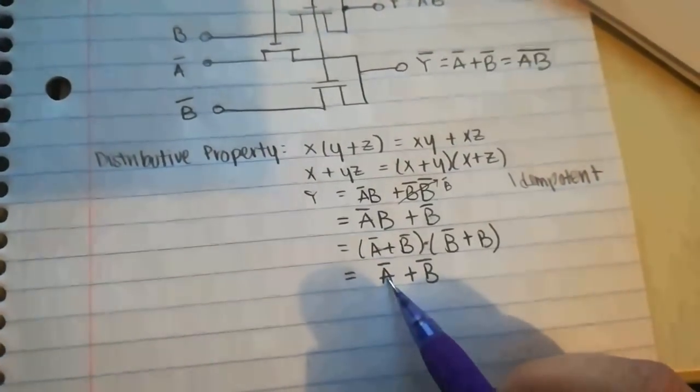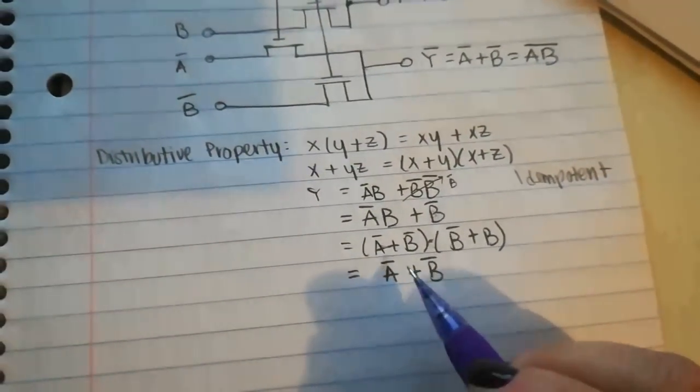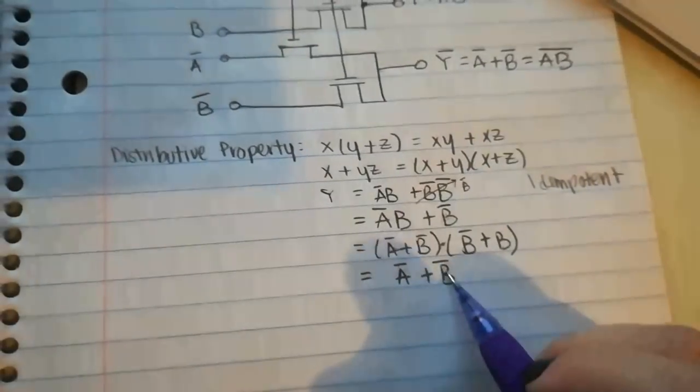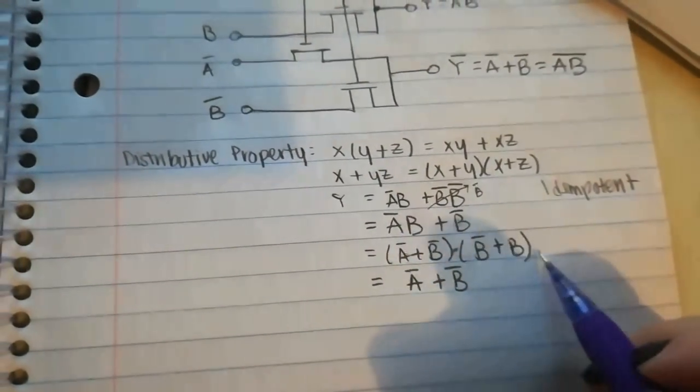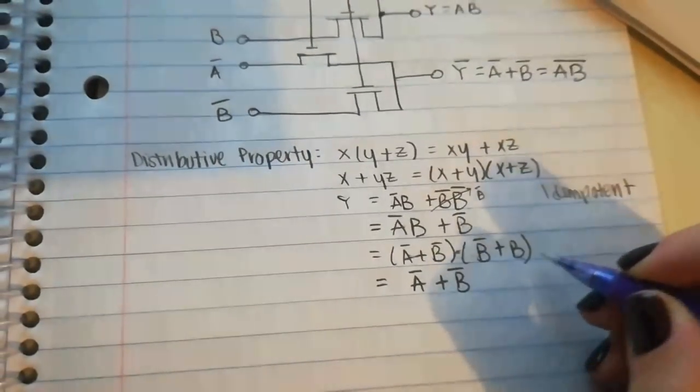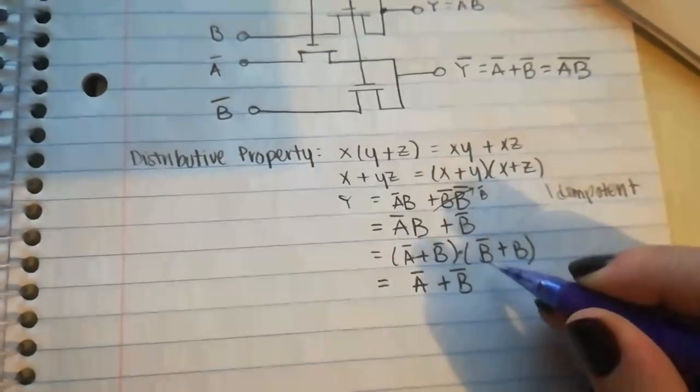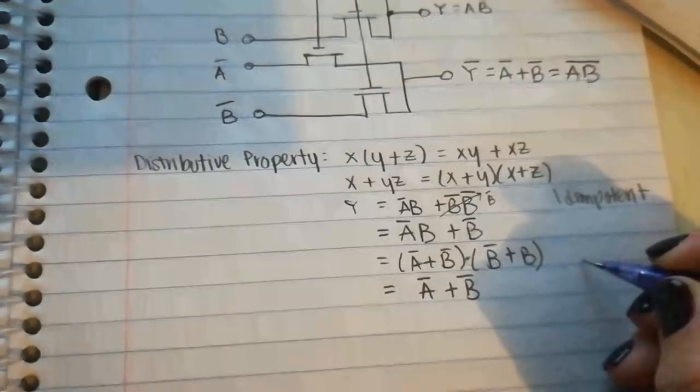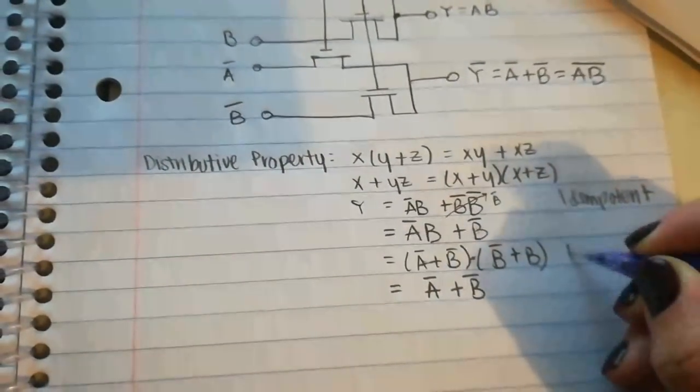And now here you are left with Ā plus B̄. Why? Because another one of our properties says that B̄ plus B, or something plus that something bar, equals to one. And that identity is called...